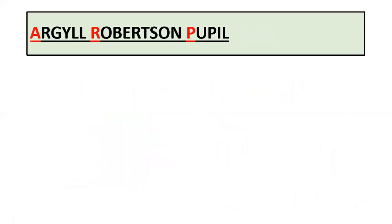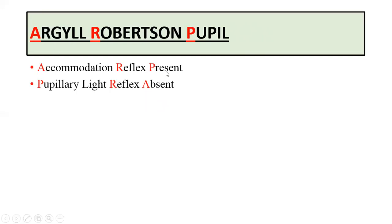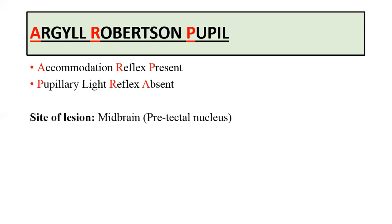You should also know about a condition called the Argyll Robertson pupil, in which the accommodation reflex is present but the pupillary light reflex is absent. In this condition, pupillary constriction occurs in response to accommodation but not in response to light. In the accommodation reflex, the pathway involves the cortex rather than the pretectal nucleus. Therefore, the site of lesion in Argyll Robertson pupil is the midbrain or pretectal nucleus, where the fibers mediating the light reflex are damaged. Such a lesion is seen in neurosyphilis.